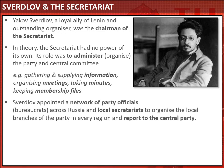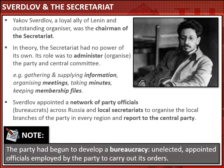From 1917 onwards, Sverdlov began to appoint a network of party officials across Russia and set up local secretariats in every region to organise the local branches of the Bolshevik party and to report back to the central party in Moscow. Here we can see that even in the party's early days, the Bolsheviks had begun to develop what we would call a bureaucracy — unelected, appointed officials paid and employed by the party to carry out its orders.